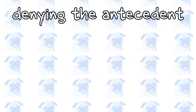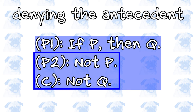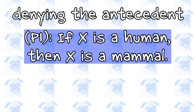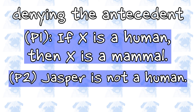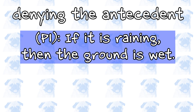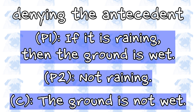The second fallacy is called denying the antecedent. This is an argument in the following form: If P, then Q. Not P. Therefore, not Q. The name comes from the transition from the negation of the antecedent P to the negation of the consequent Q. To see why this reasoning is fallacious, consider the same examples from the previous section. If X is a human, then X is a mammal. My cat Jasper is not a human — therefore, Jasper is not a mammal. This is clearly false, because all cats are mammals. Similarly, if it is raining outside, then the ground is wet. It's not raining outside — therefore, the ground is not wet. As we saw earlier, rain is not the only thing that can cause the ground to be wet.